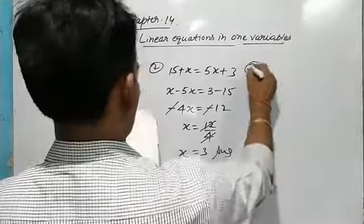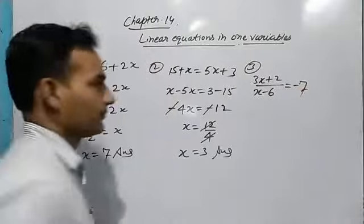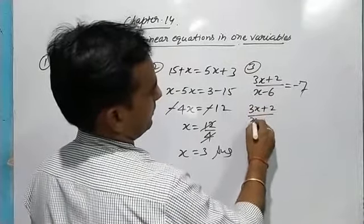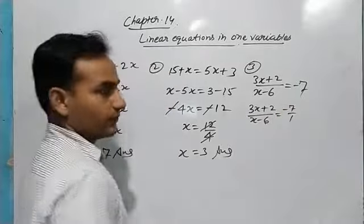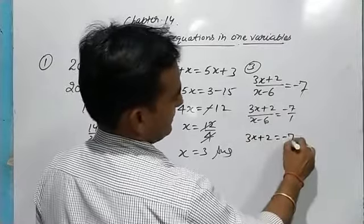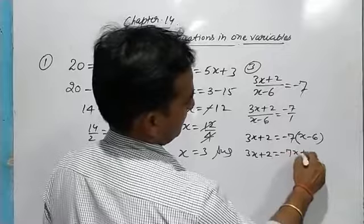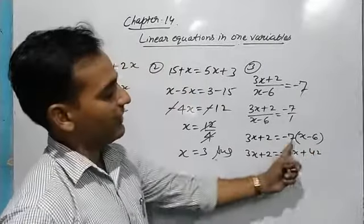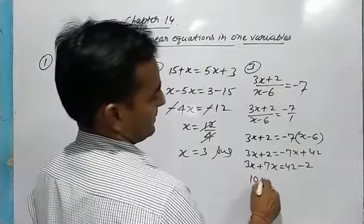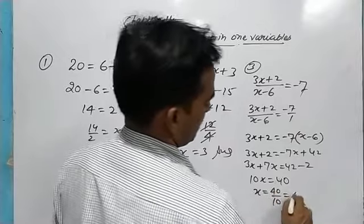Next question: (3x + 2)/(x − 6) = −7. We can write −7 as −7/1 and cross multiply: 3x + 2 multiplied by 1 equals −7 multiplied by (x − 6). So 3x + 2 = −7x + 42. Then 3x + 7x = 42 − 2, giving 10x = 40, so x = 4.